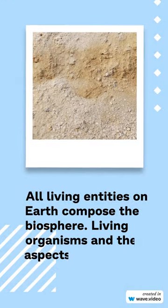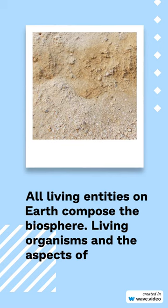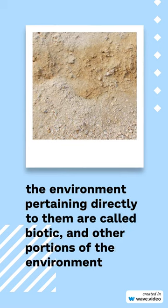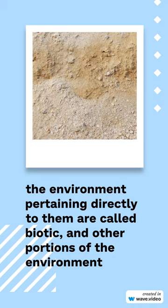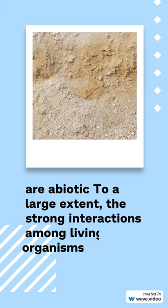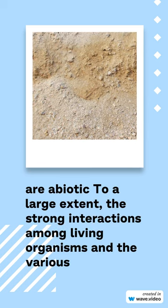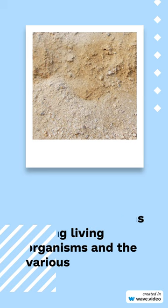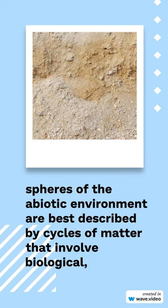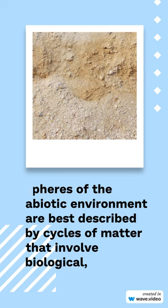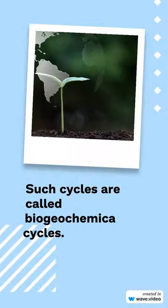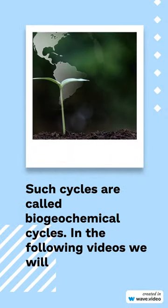All living entities on Earth compose the biosphere. Living organisms and the aspects of the environment pertaining directly to them are called biotic, and other portions of the environment are abiotic. To a large extent, the strong interactions among living organisms and the various spheres of the abiotic environment are best described by cycles of matter that involve biological, chemical, and geological processes. Such cycles are called biogeochemical cycles.